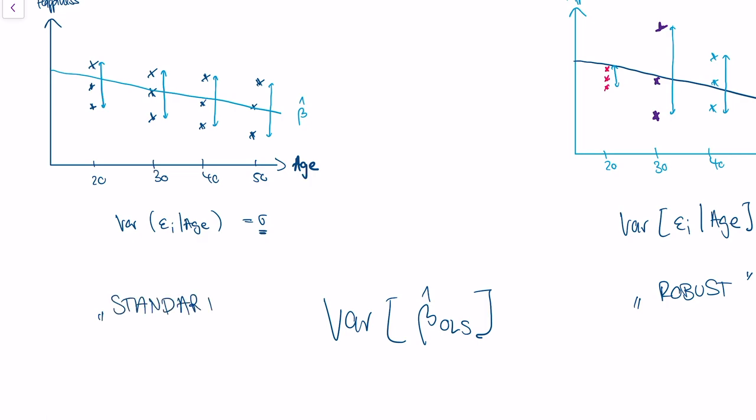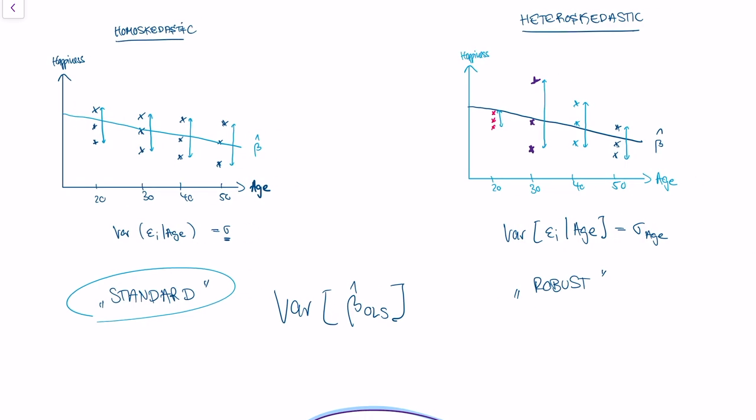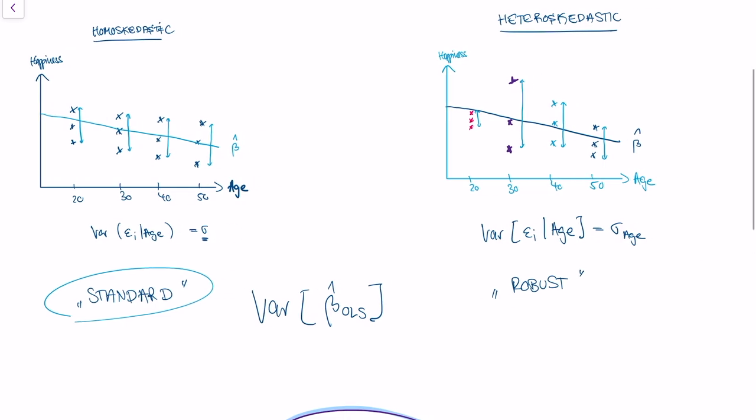And if you run a regression in R or Stata, they will always give you the standard errors formula. So they'll assume that the error term is homoscedastic. If you have reason to believe that your error term is in fact heteroscedastic, then you'll need to make an extra command to calculate robust standard errors.